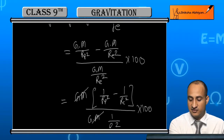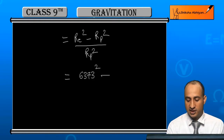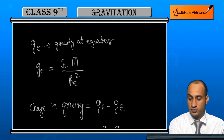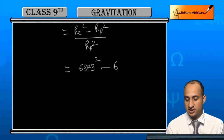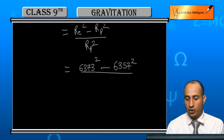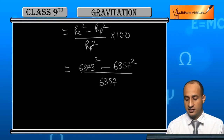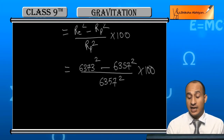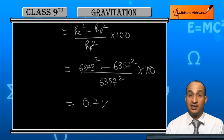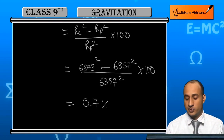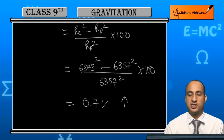Now substituting: radius of Earth at equator is 6373 km, and radius at pole is 6357 km. Plugging into the formula — (6373 minus 6357) upon 6357 squared, times 100 — when you calculate this, you get 0.7%. So the weight increases by 0.7% when you go from equator to the pole.